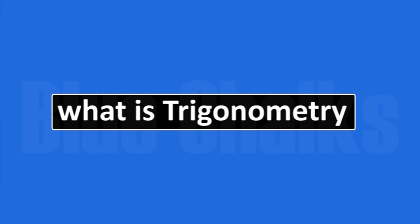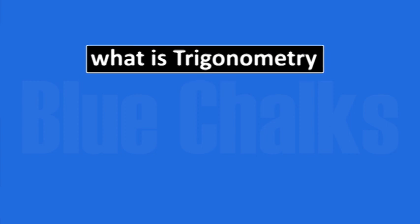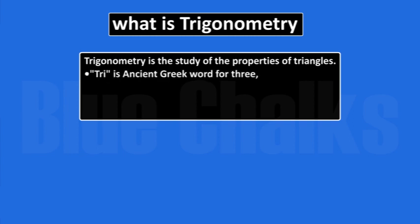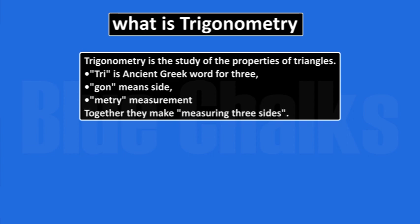So, what is trigonometry? Trigonometry is the study of the properties of triangles. 'Tri' is an ancient Greek word for three. 'Gon' means sides. 'Metri' means measurement. Together they make measuring three sides.